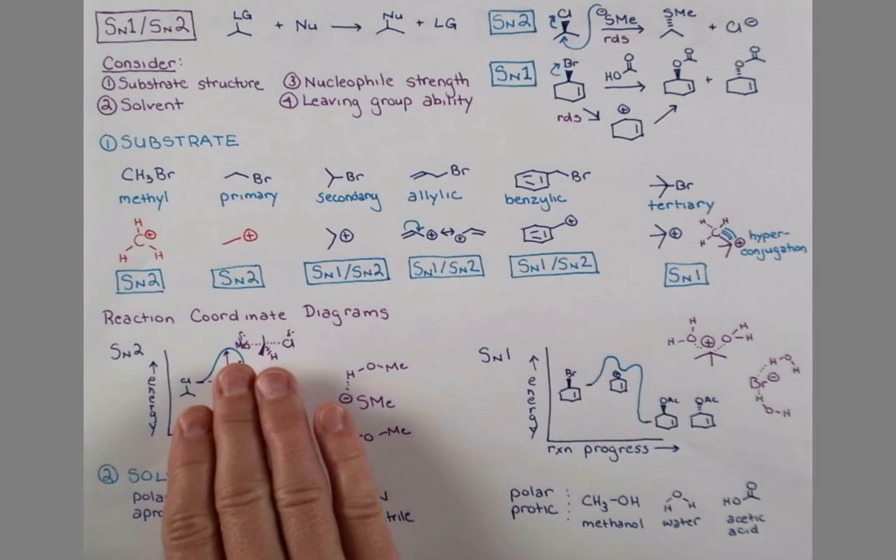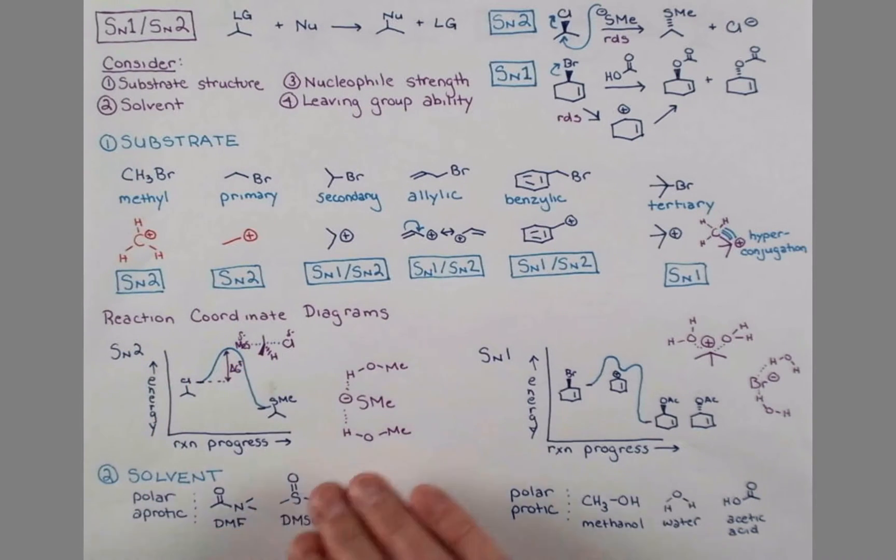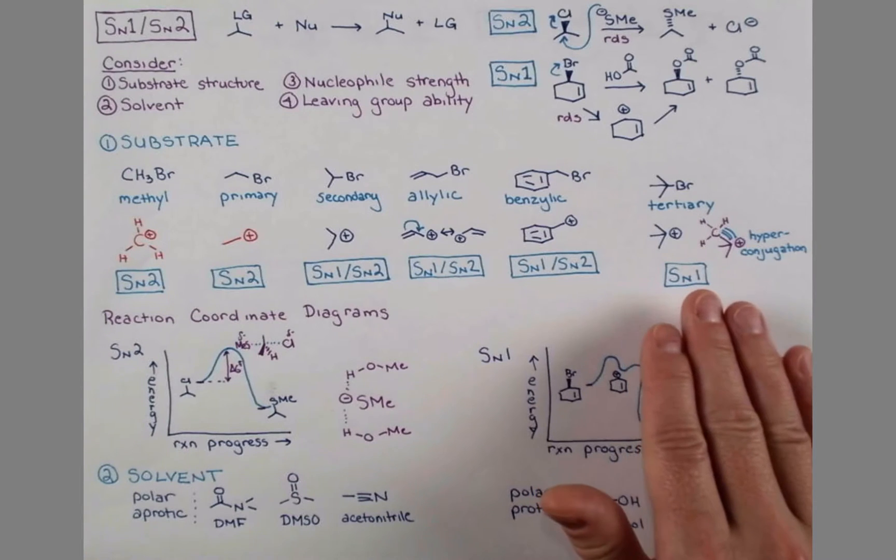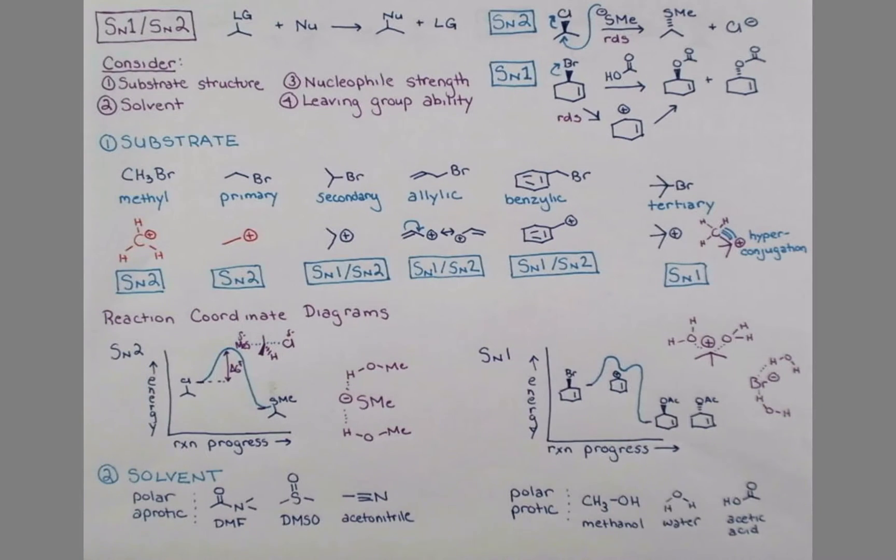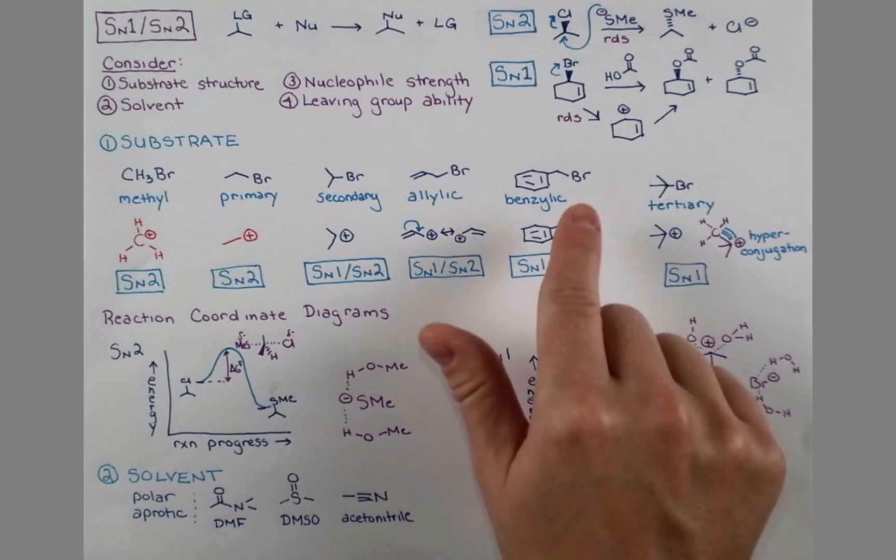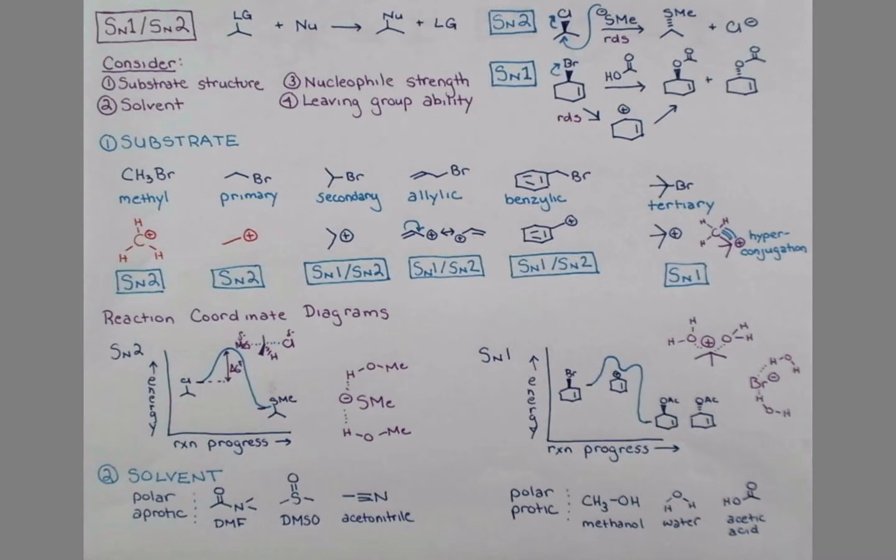Because the nucleophile needs to approach from the opposite face, certain substrates, like this tertiary bromide, cannot undergo the SN2 reaction mechanism. With these three carbon atoms, the nucleophile is sterically hindered from approaching in that way.